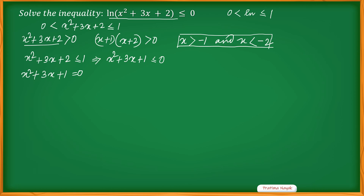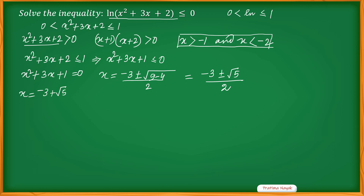Treating this as an equation: x² + 3x + 1 = 0. Using the quadratic formula, x = (-3 ± √(9 - 4)) / 2 = (-3 ± √5) / 2. So the two roots are x = (-3 + √5) / 2 and x = (-3 - √5) / 2.